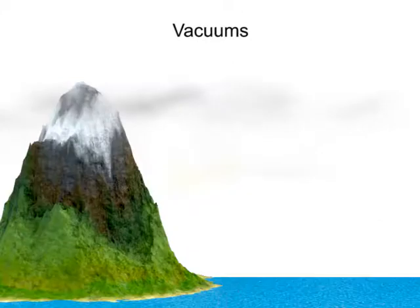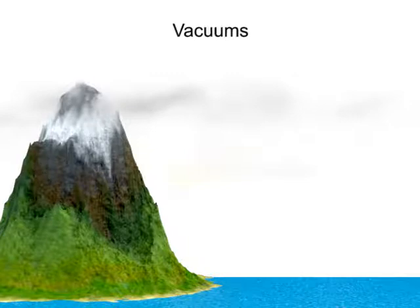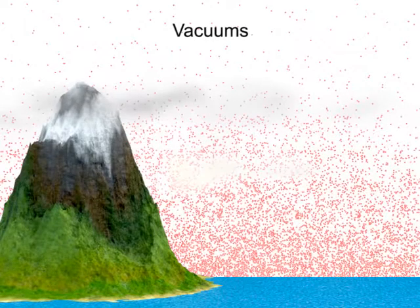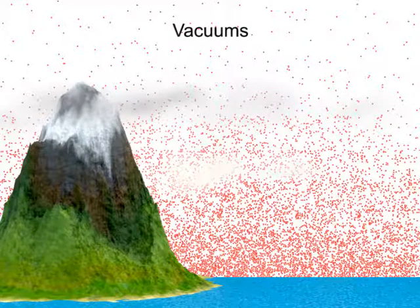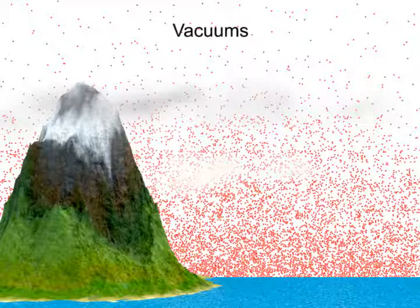A vacuum can be thought of as negative air pressure. Atmospheric pressure is defined as the weight of the atmosphere, or air, exerted on the Earth's surface and is typically measured with a barometer.